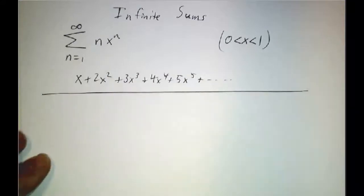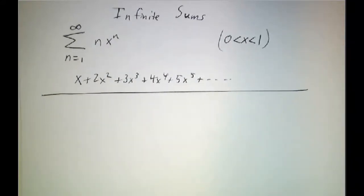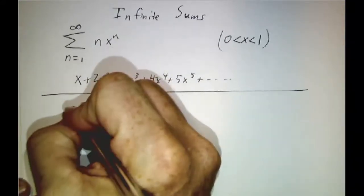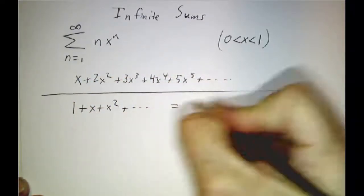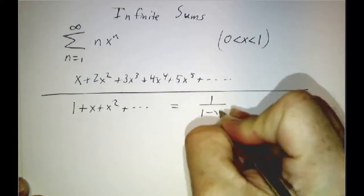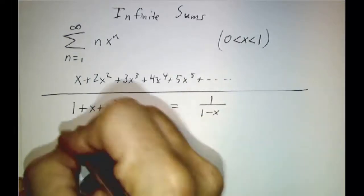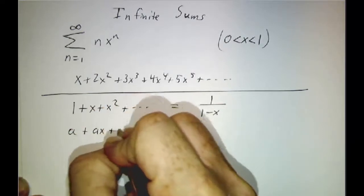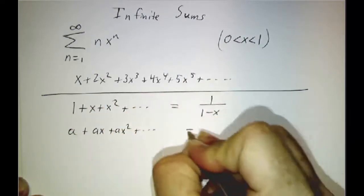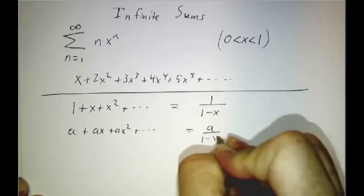So one way makes use of the formula for an infinite series. We know that 1 plus x plus x squared and so on is 1 over 1 minus x. And if you have a more general geometric series, a plus ax plus ax squared, then that's going to be a divided by 1 minus x.